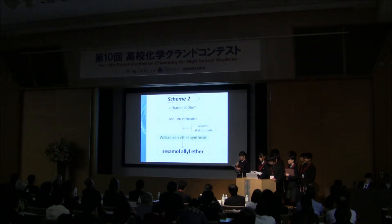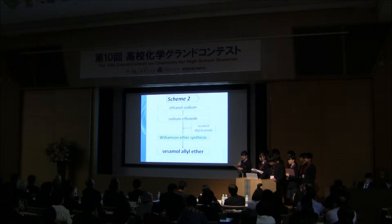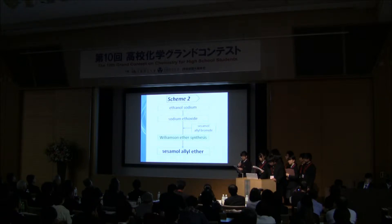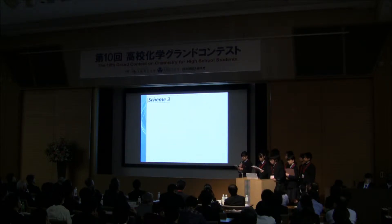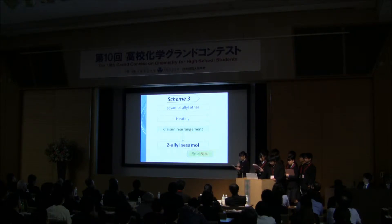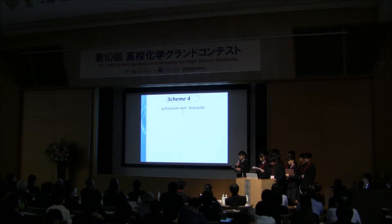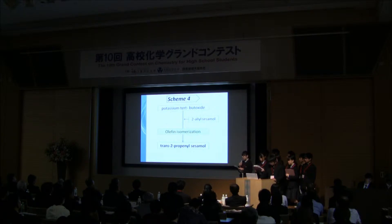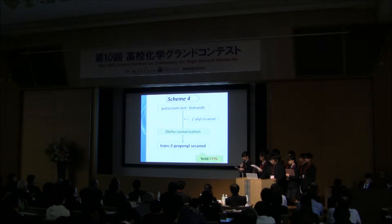At scheme 2, we added sesamol formate into sodium sulfite solution. From the solution, we obtained sesamol allyl ether by extraction, in 55% yield. At scheme 3, just by heating sesamol allyl ether, a Claisen rearrangement occurred, and 2-allyl sesamol was obtained by recrystallization, in 51% yield. At scheme 4, by isomerization of 2-allyl sesamol with potassium tert-butoxide, trans-2-propenyl sesamol was synthesized, yield 57%.